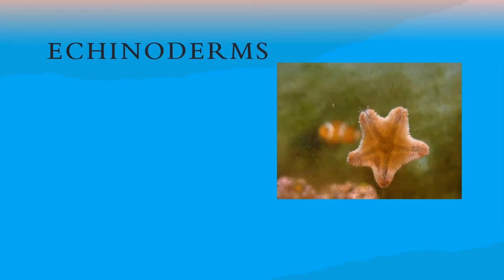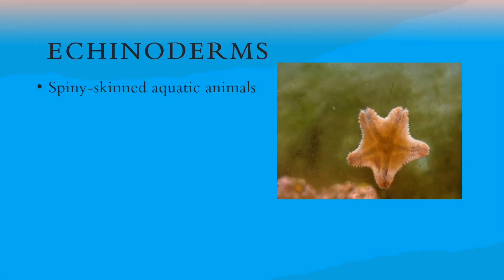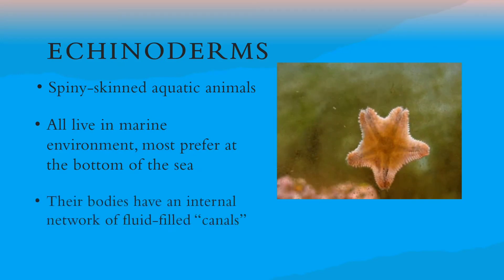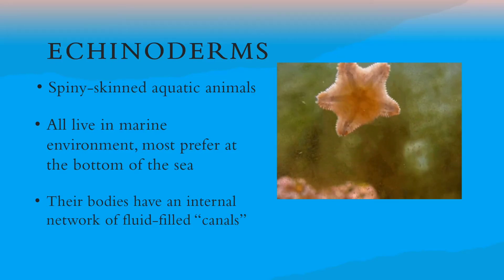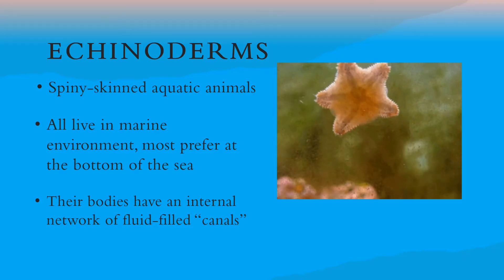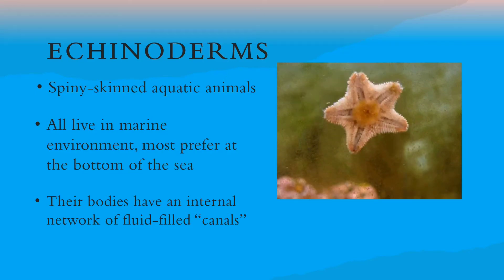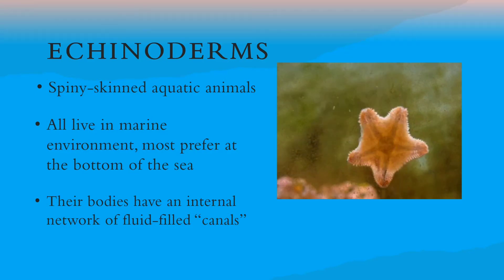Echinoderms are spiny-skinned aquatic animals. All echinoderms live in a marine environment. The bodies of echinoderms have an internal network of fluid-filled canals that are connected through a large body cavity. Some echinoderms like starfish, sand dollar, and sea urchin live at the bottom of the sea.